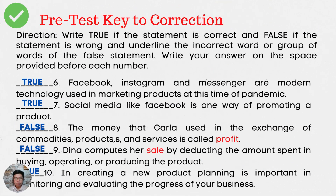Number 6: Facebook, Instagram, and Messenger are modern technologies used in marketing products at this time of pandemic — True. Number 7: Social media like Facebook is one way of promoting a product — True. Number 8: The money that Carla used in exchange of commodities, products, and services is called profit — False. The word is 'profit.' Number 9: Dina computes her sale by deducting the amount spent in buying, operating, or producing the product — False. The word that makes it false is 'sale.' Number 10: In creating a new product, planning is important in monitoring and evaluating the progress of your business — True.